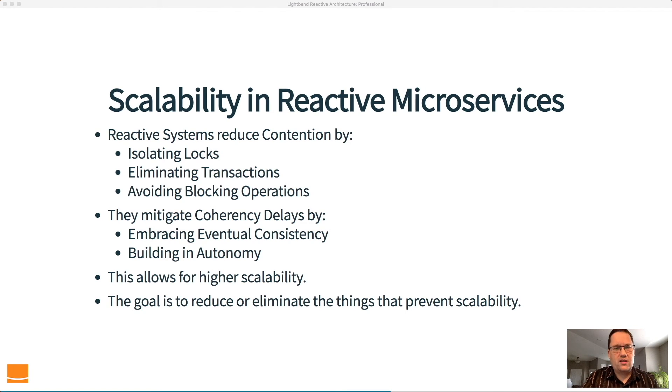We mitigate coherency delays. And we do that by embracing eventual consistency. If we accept the fact that things take a certain amount of time, then when they take time due to coherency delay, we won't be surprised by it. But we also look to build in autonomy.